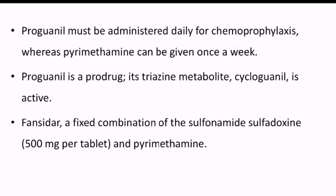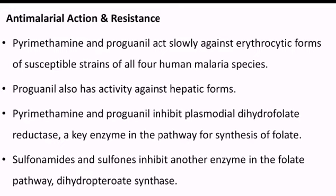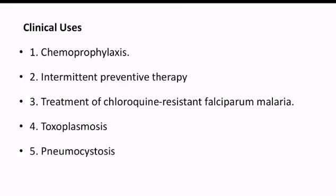Proguanil must be administered daily for chemoprophylaxis, whereas pyrimethamine can be given once a week. Proguanil's triazine metabolite cycloguanil is the active form. Fansidar is a fixed combination of the sulfonamide sulfadoxine (500 mg per tablet) and pyrimethamine. Pyrimethamine and proguanil act slowly against the erythrocytic forms of susceptible strains of all four human malaria species; proguanil also has activity against hepatic forms. They inhibit plasmodial dihydrofolate reductase, the key enzyme in the pathway for folate synthesis. Sulfonamides and sulfones inhibit another enzyme in the folate pathway, dihydropteroate synthase.